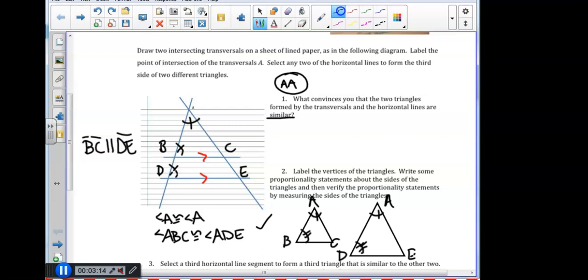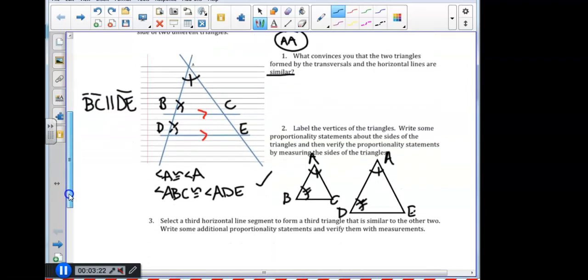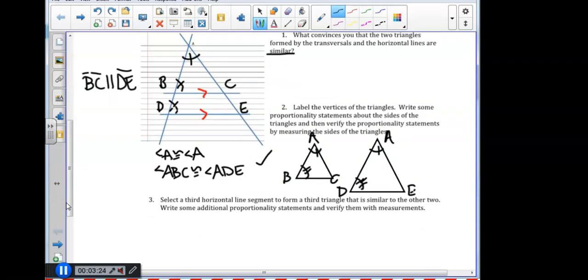Then we're asked in 2, well I've already labeled the vertices of the triangles and I redrew them. We're asked to write some proportionality statements. Recall that if two triangles are similar, which we've just proven, then their sides will have the same ratios. So let's write some proportionality statements. If I look at my two triangles, I'm going to choose corresponding sides.